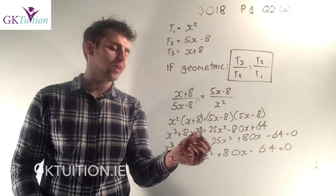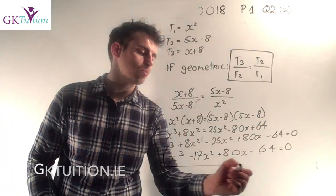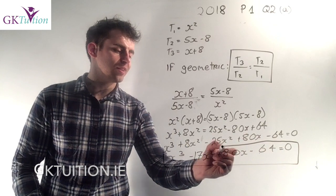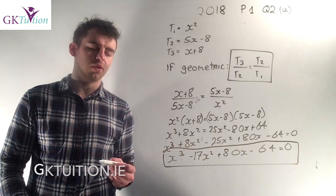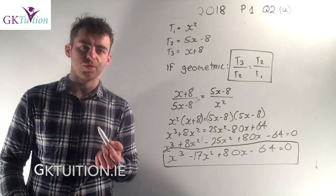Now if you multiply this out and simplify it down, you just bring everything to one side and you get what you were trying to prove in the first place, which is that x cubed minus 17x squared plus 80x minus 64 equals zero.